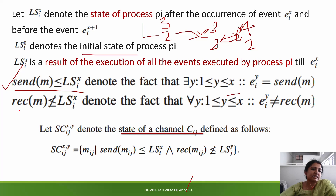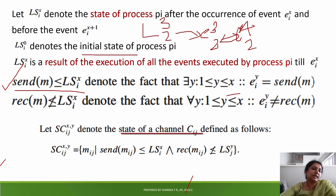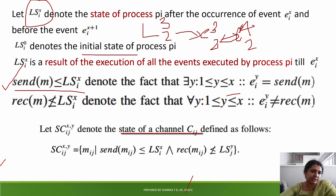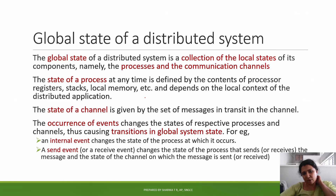The second rule: Receive(m) is not equal to LSix — meaning a receive event must also be accounted for. These rules govern send and receive events in the local state of the i-th processor. The global state is a collection of local states.